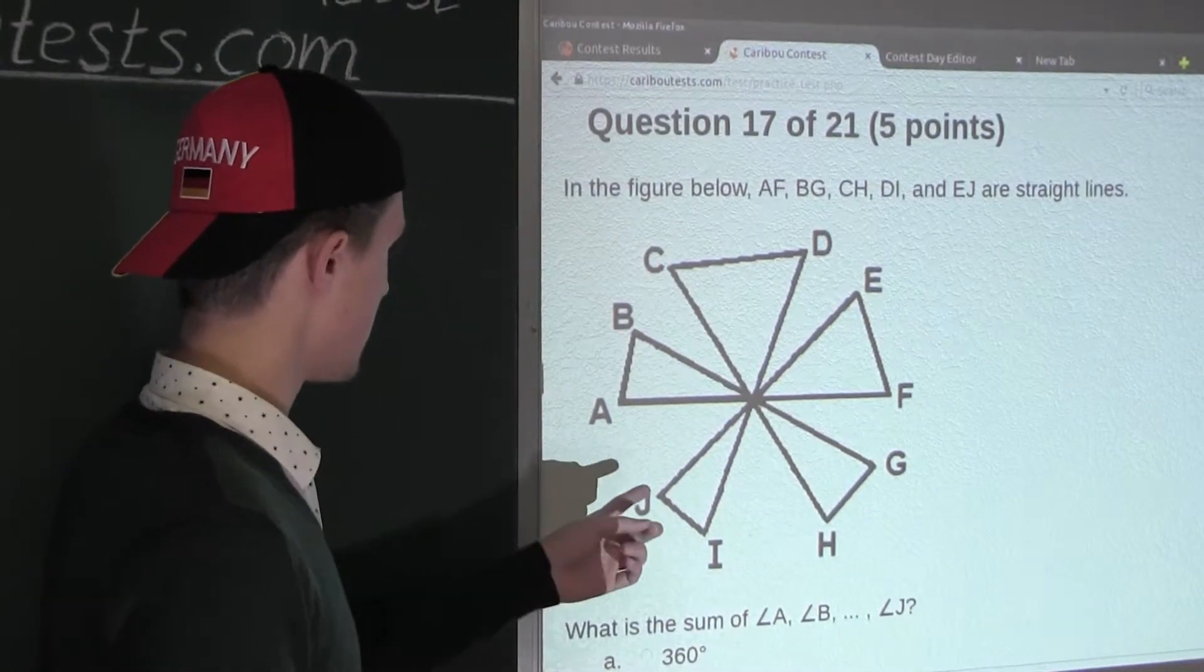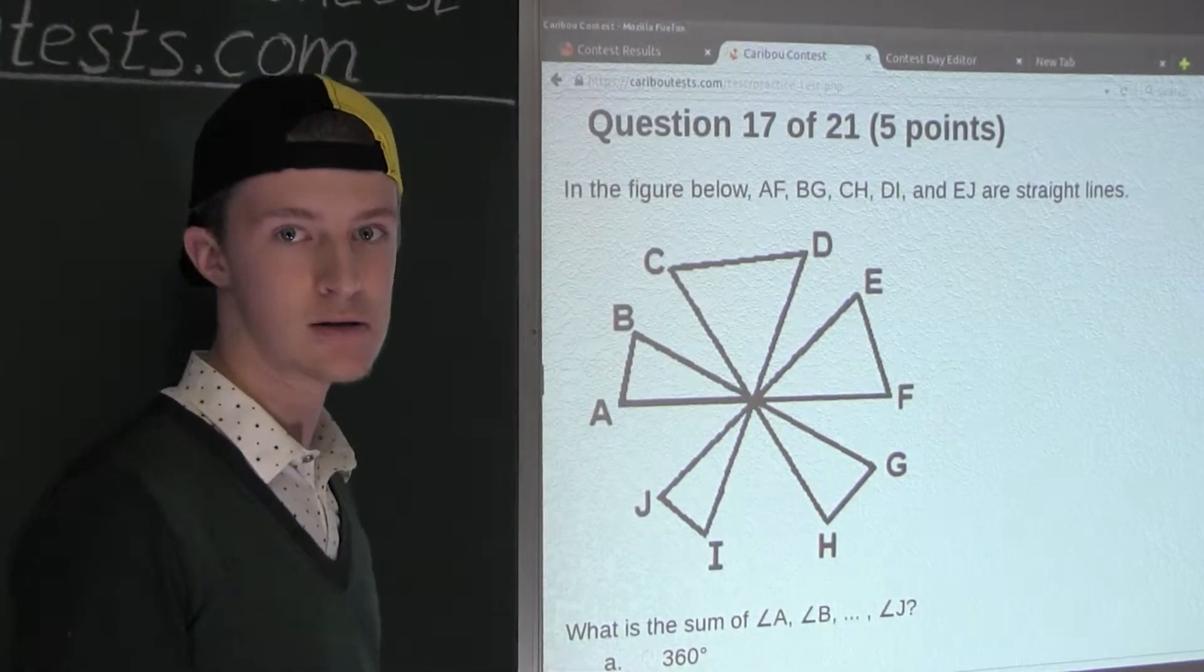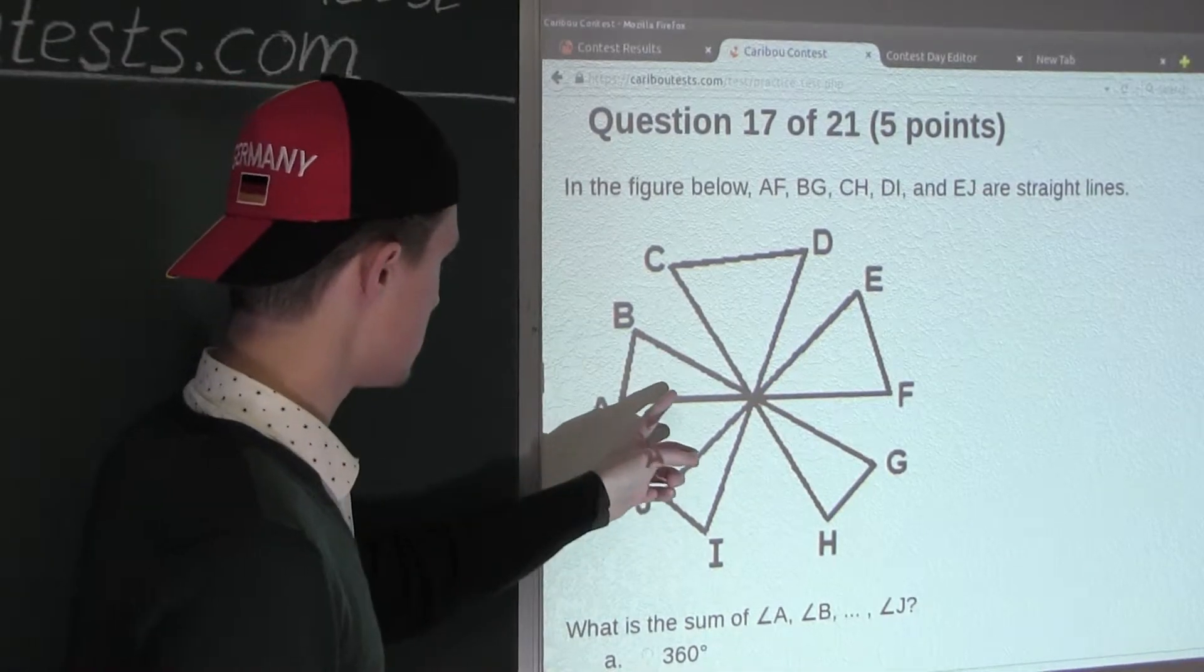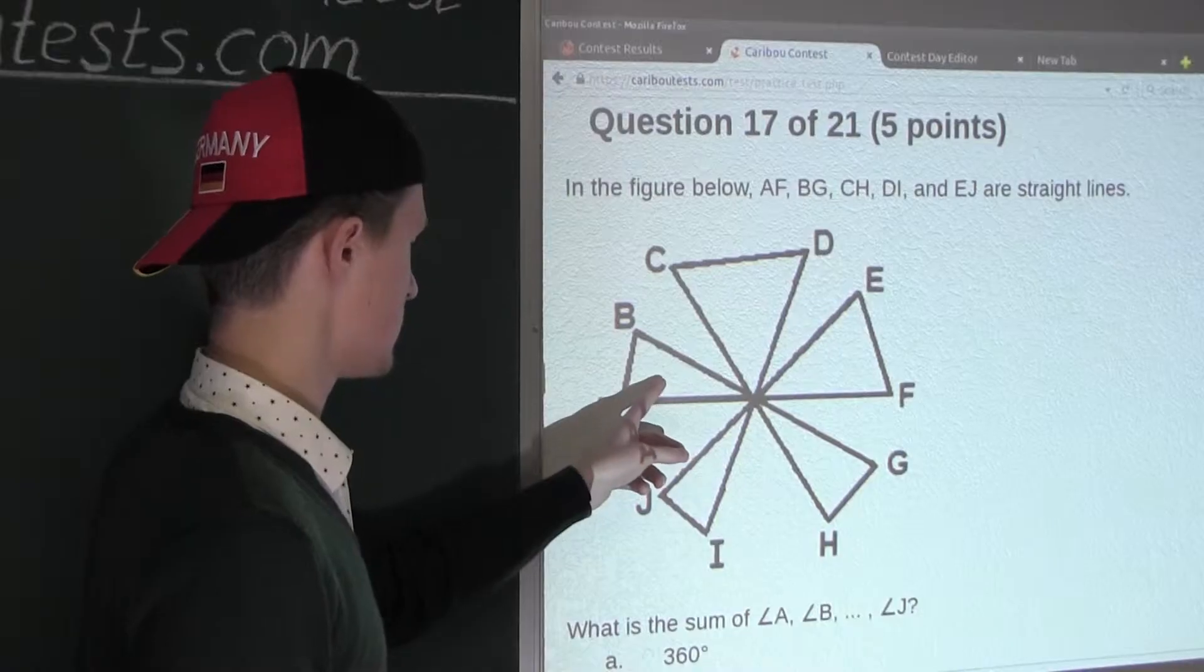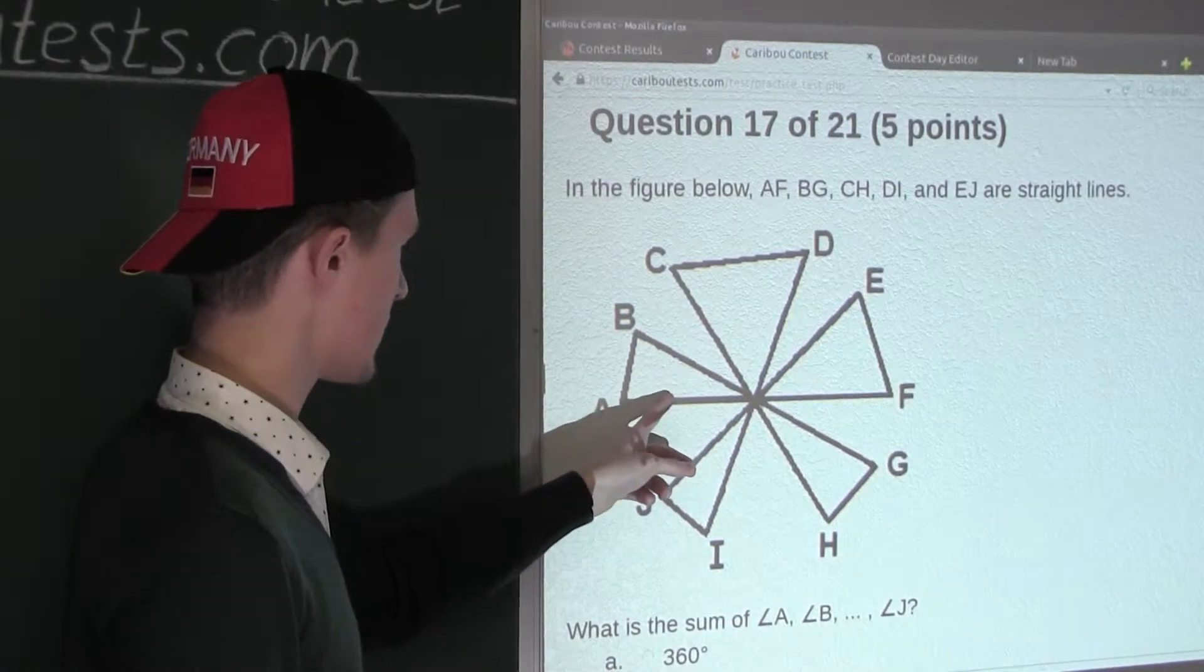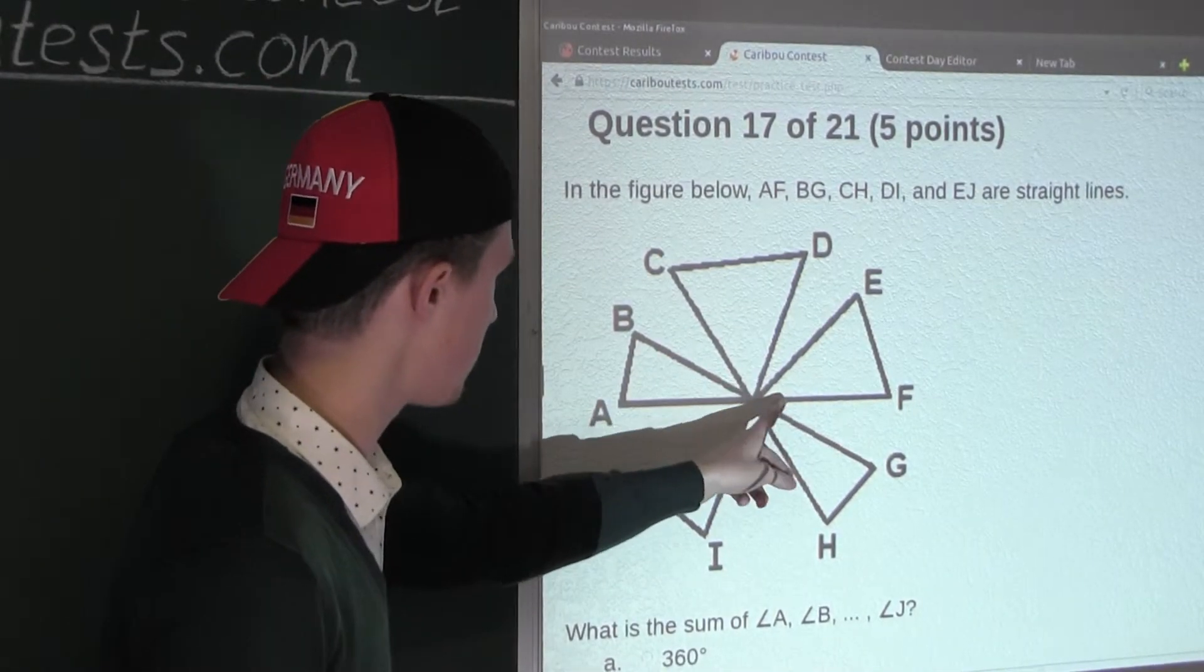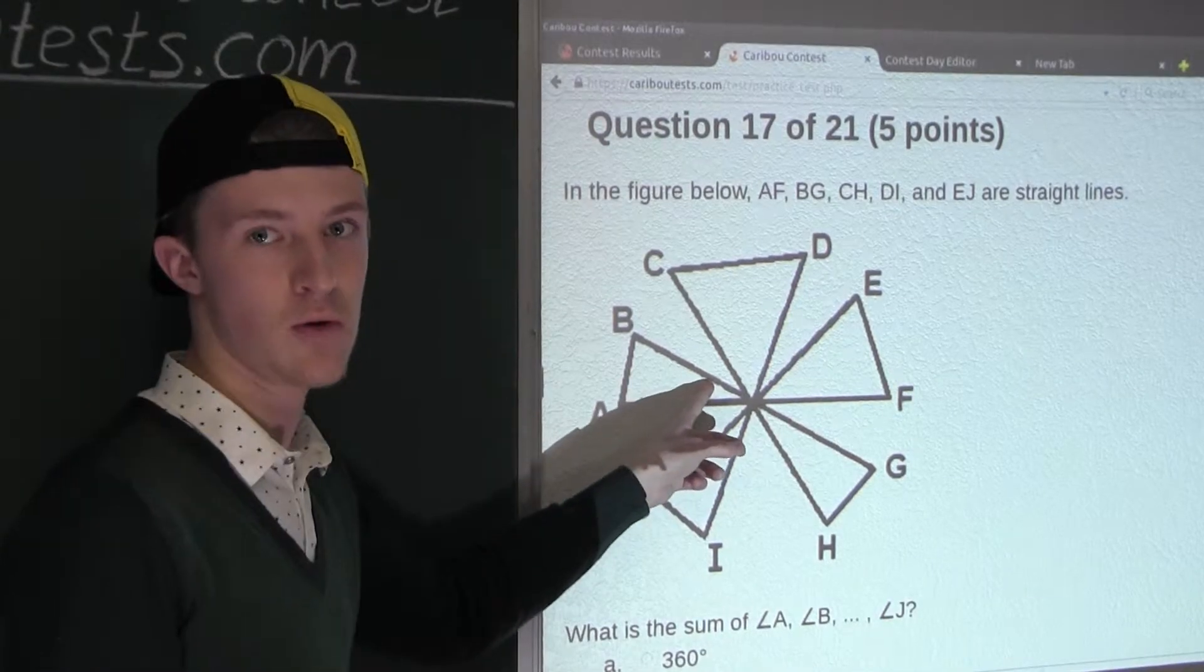Now a way that we can find the sum of all the lettered angles is to find the sum of all the angles in the five triangles here shown, and then subtract the sum of the five middle angles that we don't want to include.